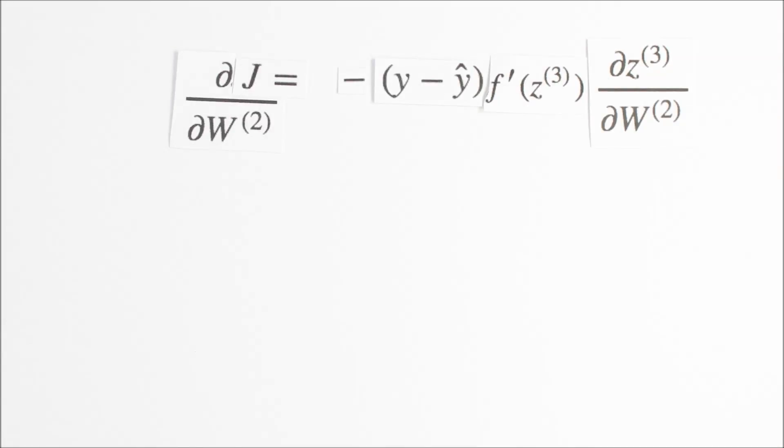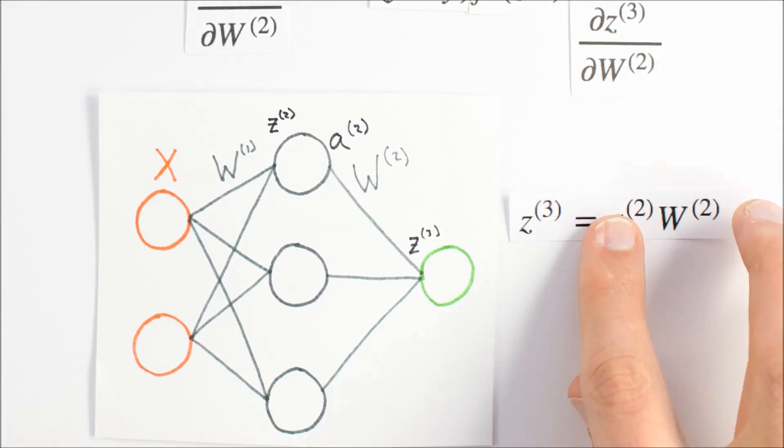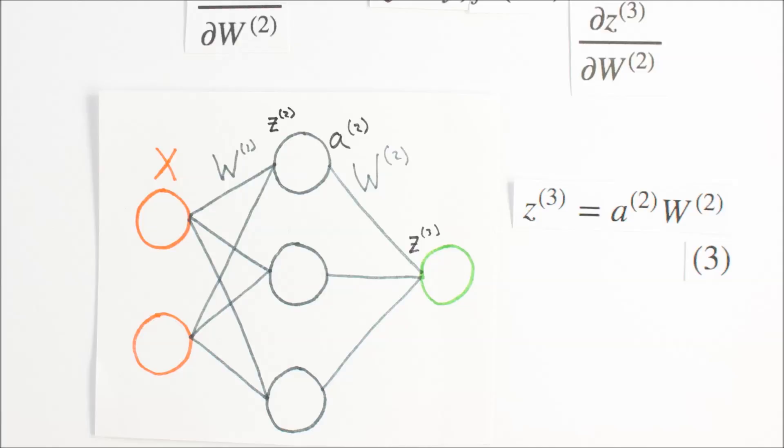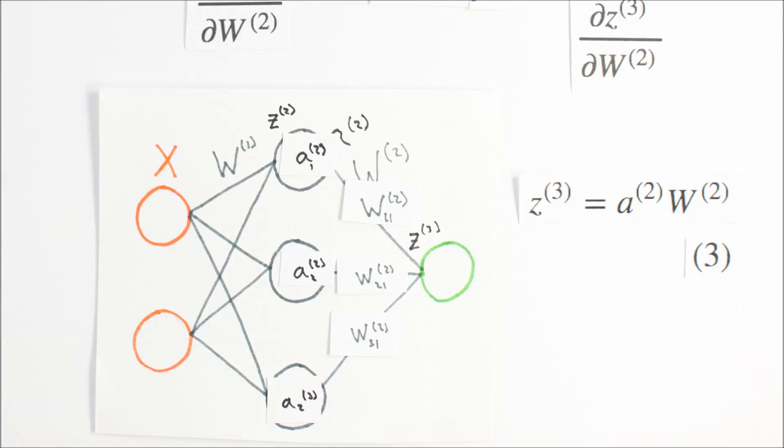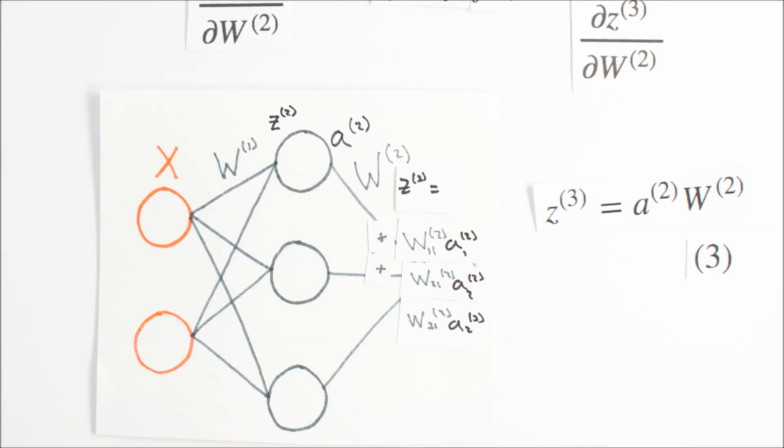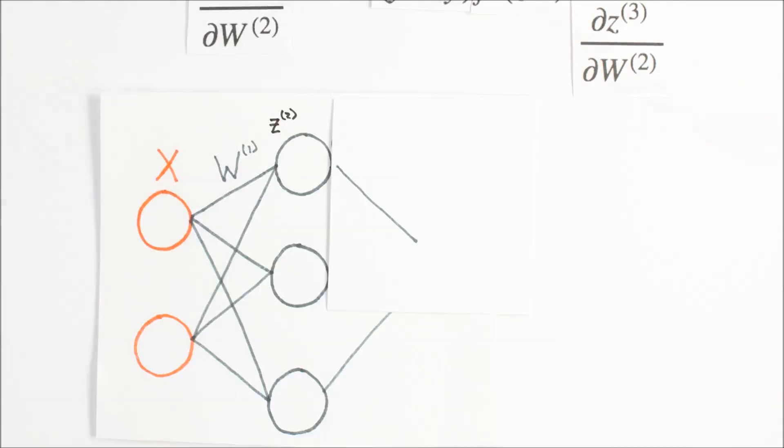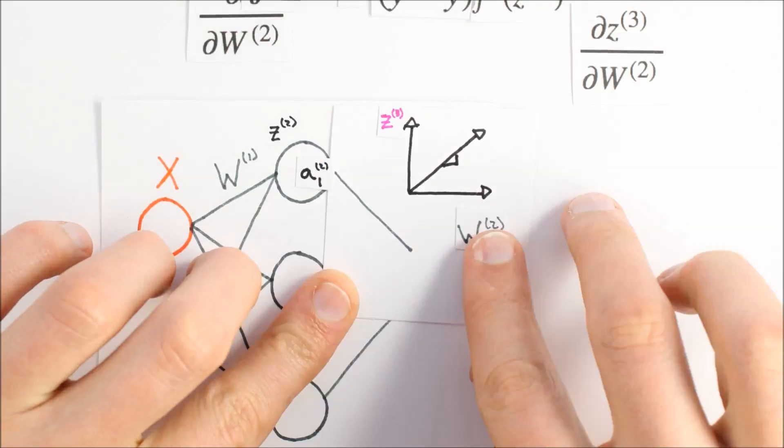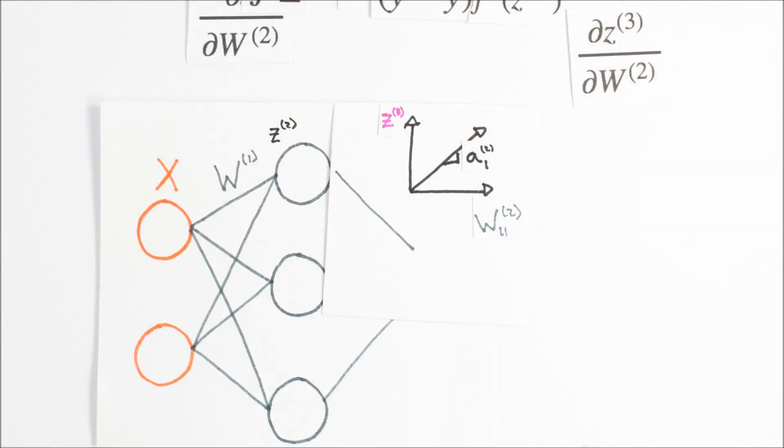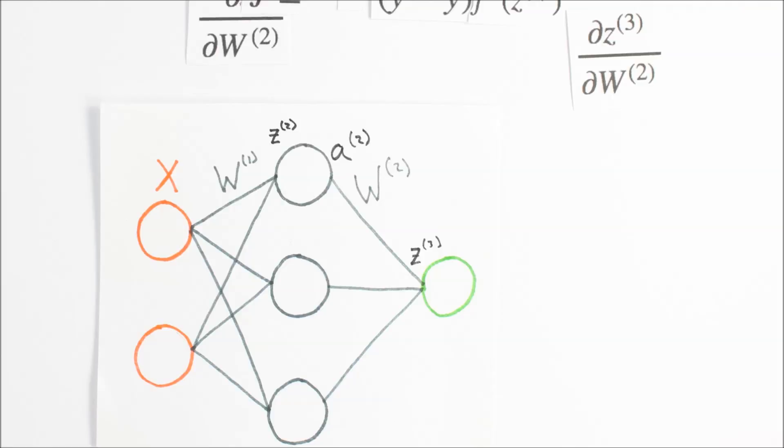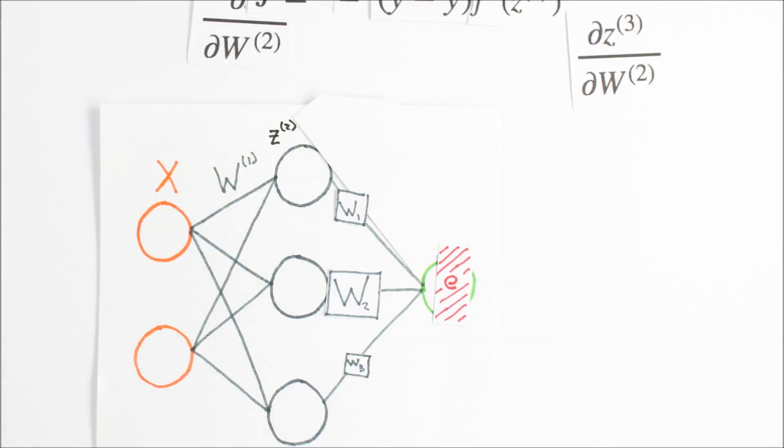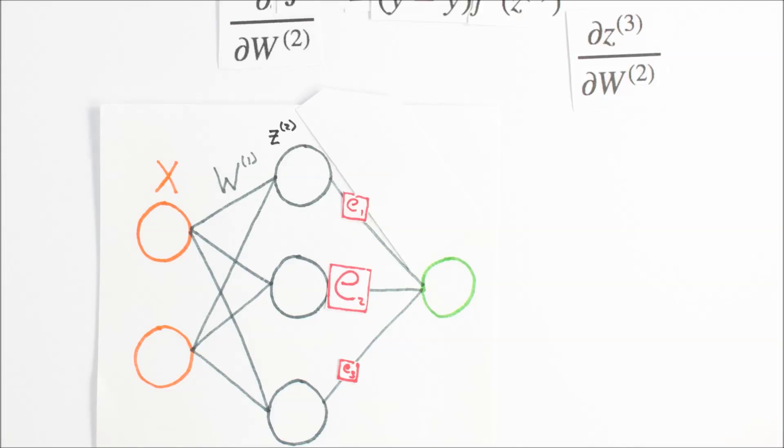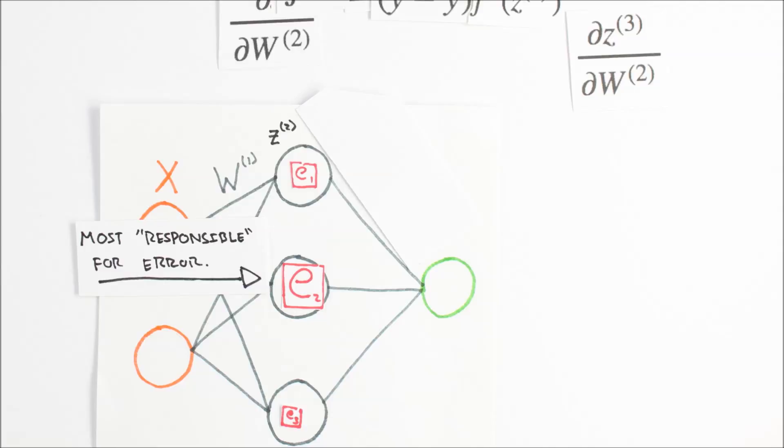Our final piece of the puzzle is dz3 dw2. This term represents the change of z, our third layer activity, with respect to the weights in the second layer. z3 is the matrix product of our activities, a2, and our weights, w2. The activities from layer 2 are multiplied by their corresponding weights and added together to yield z3. If we focus on a single synapse for a moment, we see a simple linear relationship between w and z, where a is the slope. So for each synapse, dzdw2 is just the activation a on that synapse. Another way to think about what the calculus is doing here is that it is back-propagating the error to each weight. By multiplying by the activity on each synapse, the weights that contribute more to the overall error will have larger activations, yield larger djdw2 values, and will be changed more when we perform gradient descent.